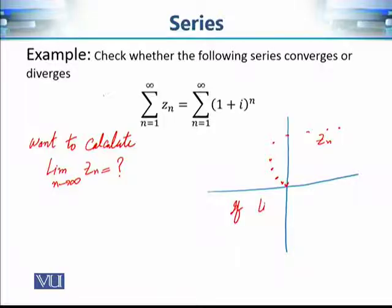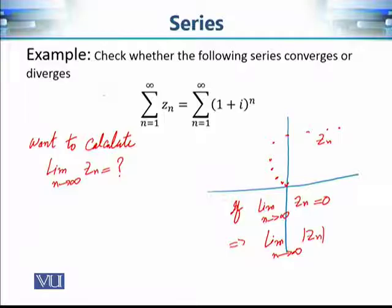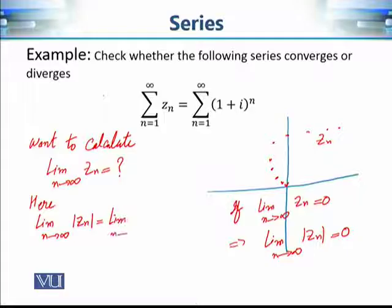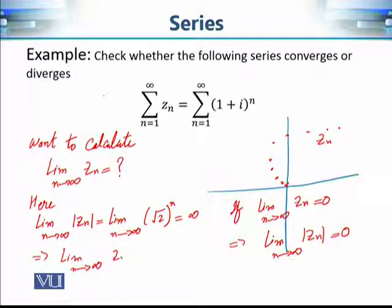As we increase n, the terms get closer and closer to the origin only if their moduli also converge to 0. So the limit as n approaches infinity of |zₙ| must also equal 0. In this case, it is difficult to calculate the limit of zₙ directly, so let's calculate the limit of the modulus. The modulus of (1 + i)ⁿ equals (√2)ⁿ, and as n approaches infinity, this goes to infinity.